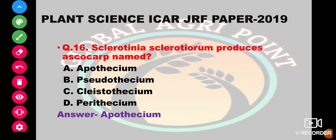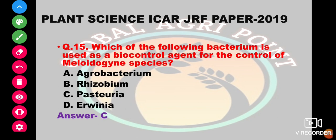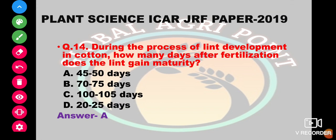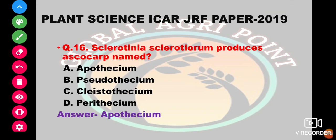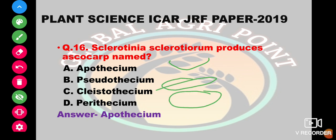Sclerotinia sclerotiorum produces an ascocarp named apothecium, pseudoapothecium, cleistothecium, or perithecium. The answer is apothecium, which is the open type of fruiting body. Cleistothecium is totally closed with no opening, and perithecium is cup-shaped with a pore-like opening. So the answer is apothecium.